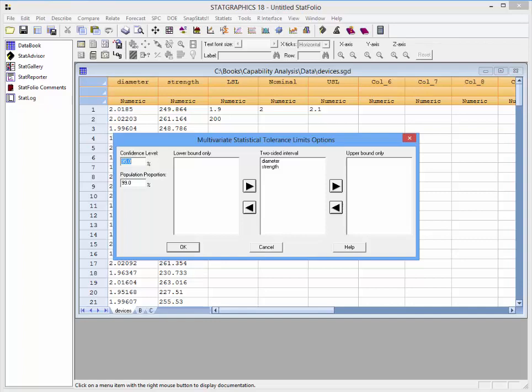The next thing I need to do is tell the program which of the variables should have a two-sided tolerance interval, which require a lower bound only, and which require an upper bound only. In this case, the specification for diameter is two-sided, so I'll ask for a two-sided tolerance interval. On the other hand, the specification for strength has a lower bound only, so I'll move it to this field.